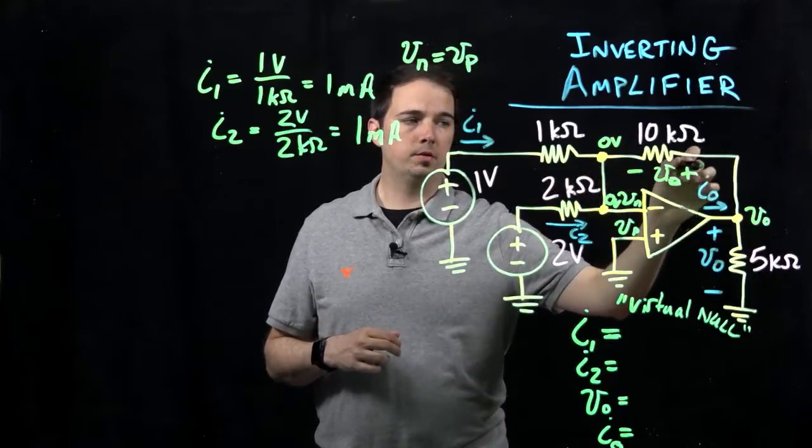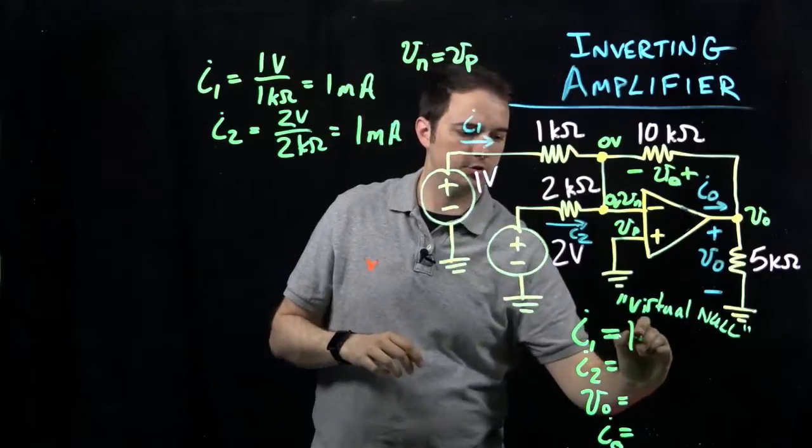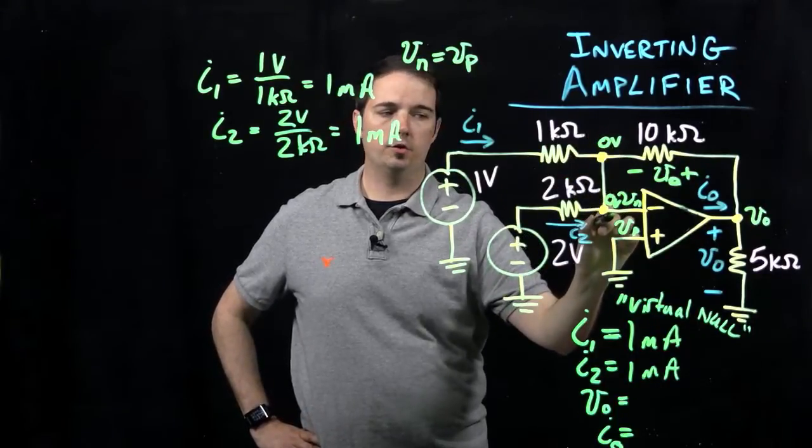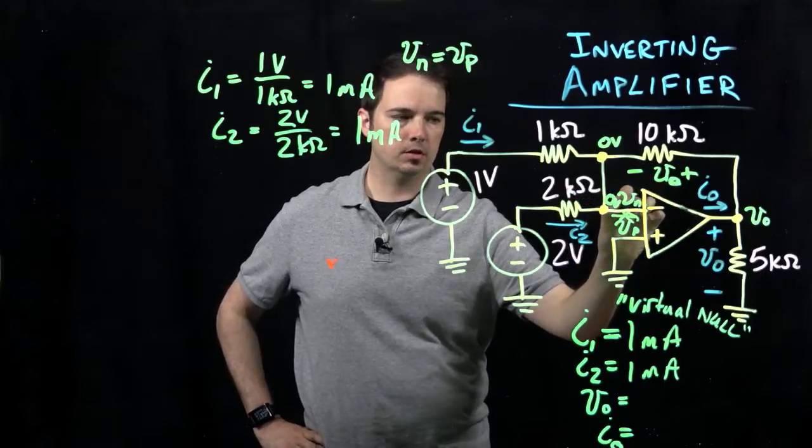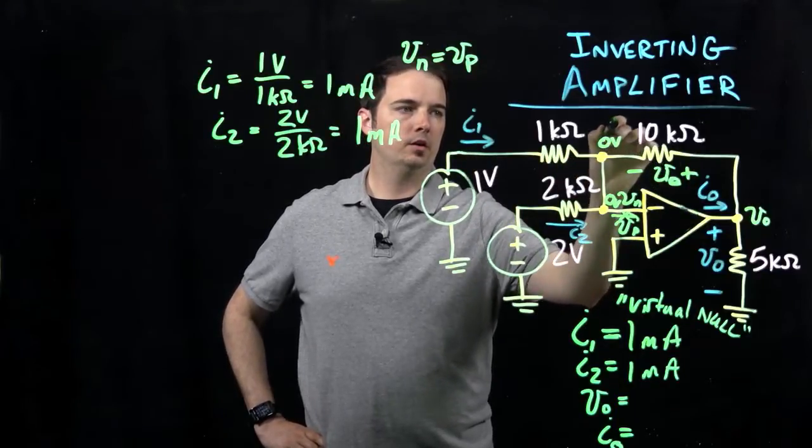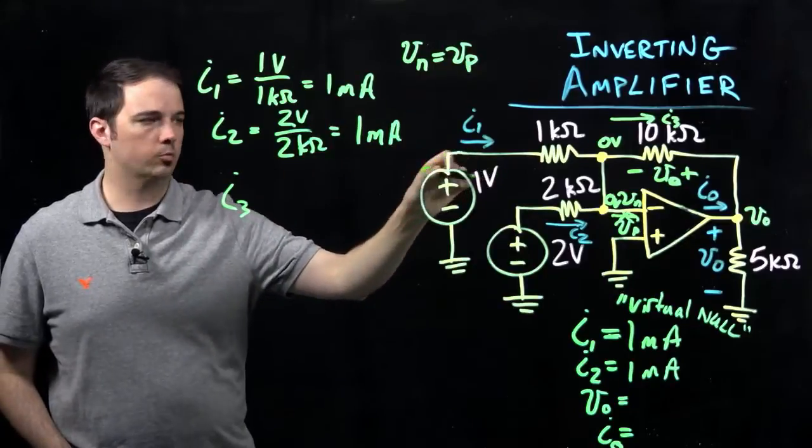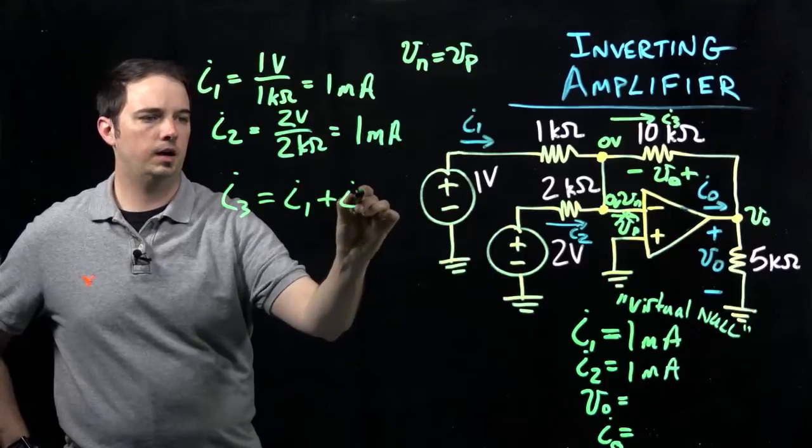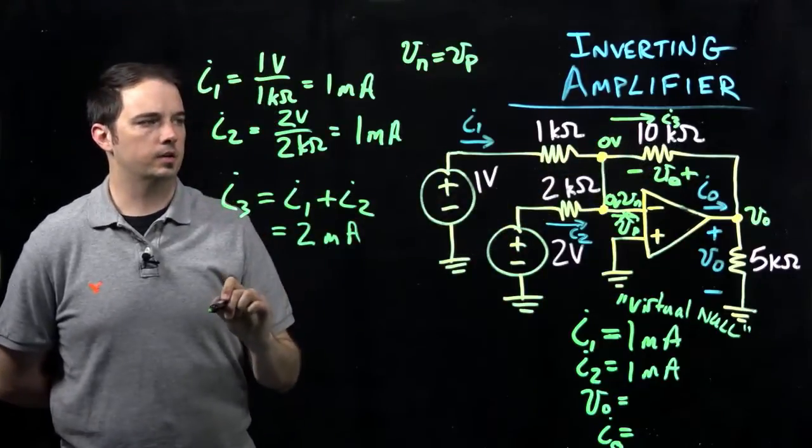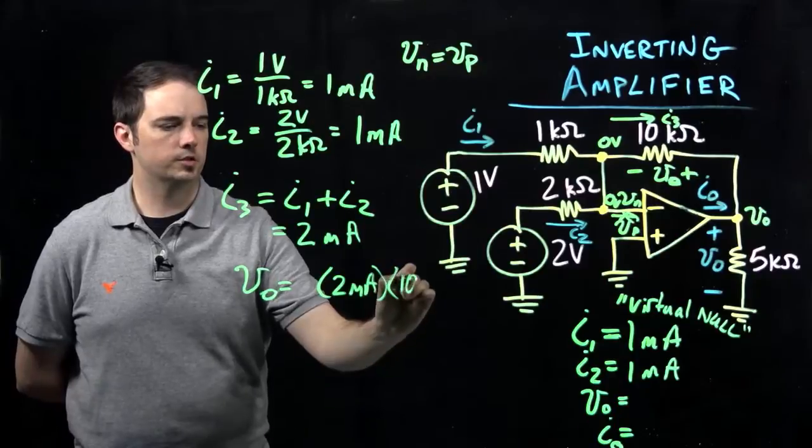We have an increase of V0 and then the same amount has to drop across the 10 kiloohm resistance. What is the current traveling through this 10 kiloohm resistor? Looking at KCL through this node, since there can't be any current flow going into the input terminals based on the ideal op amp, I1 plus I2 have to be the current going here. So I3, the current through the 10 kiloohm resistor, equals I1 plus I2, which is 2 milliamps.